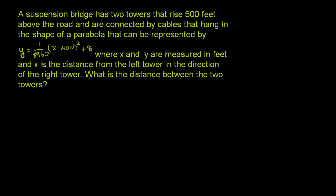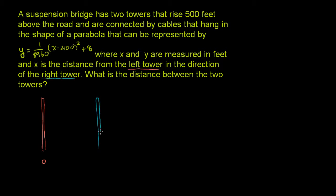So if we draw the leftmost tower — the left tower right here in orange — that tower is at x equals 0. We'll call that the 0 point right there. And then x is just measuring the distance from that leftmost tower to the rightmost tower. The right tower is right over here. They're both 500 feet high, and we don't know where the right tower is — that's what we have to figure out. We have to figure out the distance between the two.